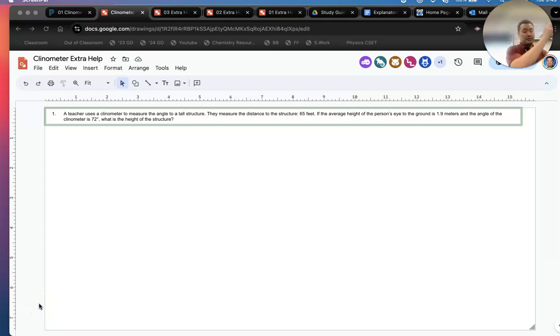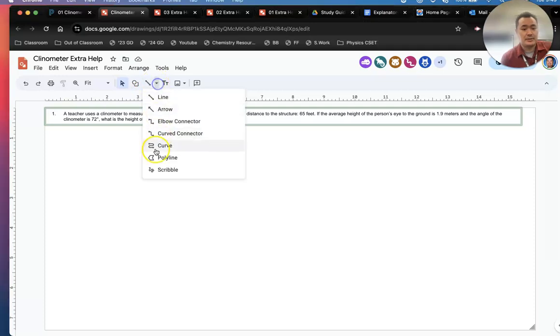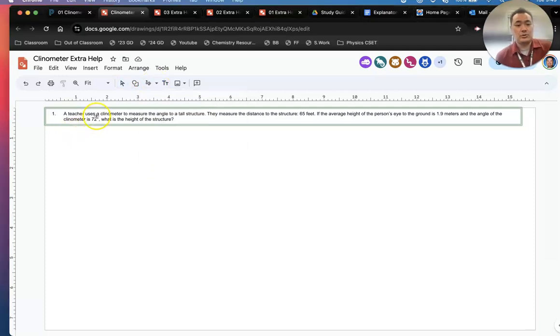90 degrees of our clinometer and subtract it to the angle. Because right now this angle is not the true angle of the rocket. So everyone do 90 minus 72.